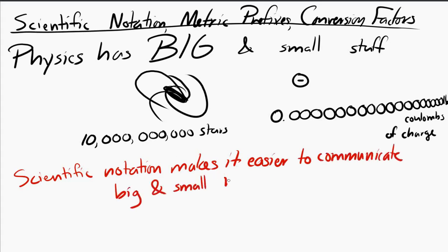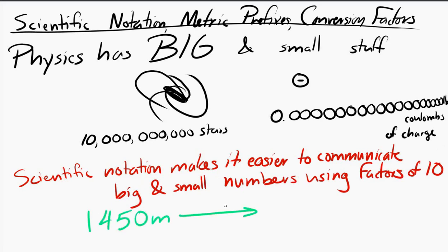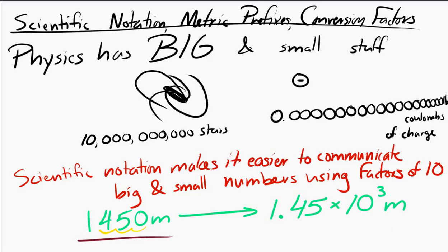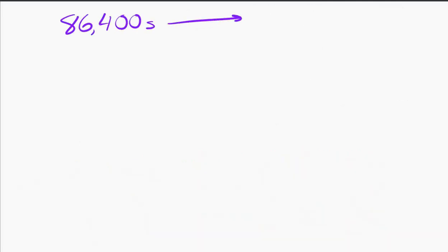When I say scientific notation, for example, if we have the number 1450 meters, that can be written as 1.45 times 10 to the 3 meters. I've taken a number written as a bunch of digits and rewritten it as another number times a power of 10. Let's try another one: 86,400 seconds could be written as 8.64 times 10 to the 4 seconds.